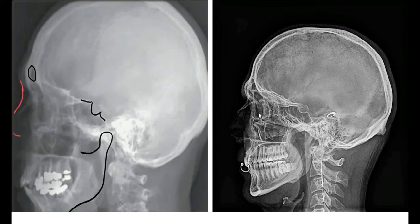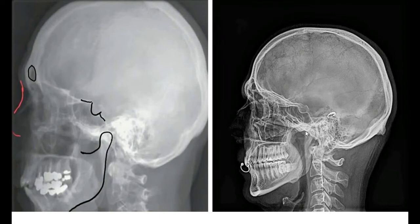The orbit and maxilla are visible. Within the maxilla is the maxillary air sinus. The alveolar process of the maxilla contains the teeth. There is a condyle — the condylar process of the mandible — and in front of it, the coronoid process of the mandible.